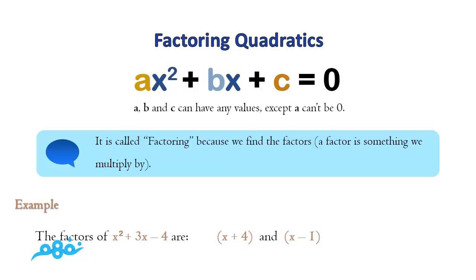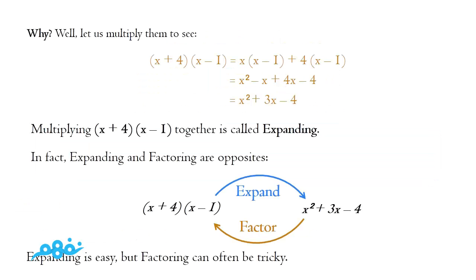For example, the factors of x² plus 3x minus 4 are (x plus 4) and (x minus 1). To check that these are the real factors, we reverse the procedure and multiply them again: (x plus 4) multiplied by (x minus 1) gives x times (x minus 1) plus 4 times (x minus 1), which equals x² minus x plus 4x minus 4. Gathering similar terms, negative x plus 4x equals 3x, giving x² plus 3x minus 4 — the same function.